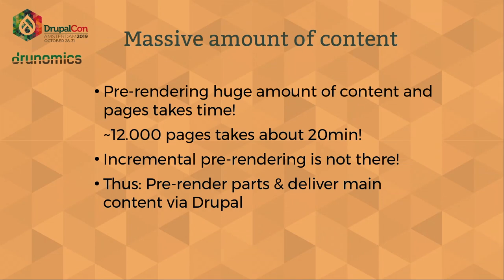Handling massive amounts of content turns out to be a little more difficult. Pre-rendering huge amounts of content can just take time — with Nuxt.js, about 5,000 pages would take about 20 minutes to pre-render. The ideal setup would be if the framework knew which pages changed and only pre-rendered those. But that's not currently available, and I don't know of any other static site generator with that feature right now. I think Tome, the Drupal module which is a static site generator for Drupal, can do that — but I've never tried it.